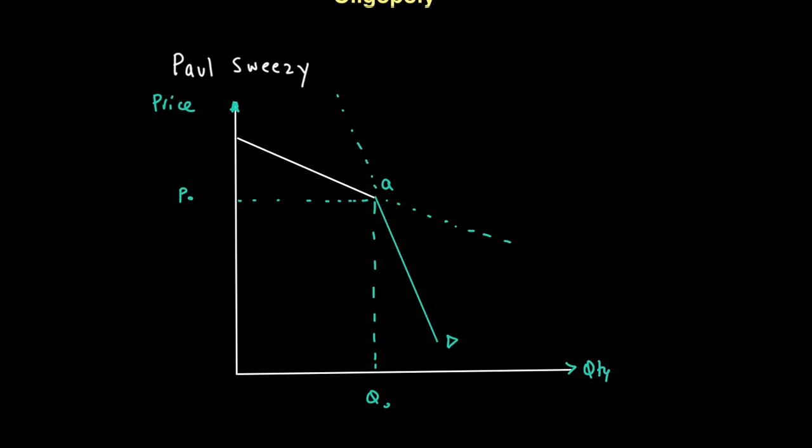Now, why is that so? According to the theory, it says that if the firm raises its price above P0, then it is unlikely that its competitors would raise their price and so a lot of demand would be lost to the other firms. Because if you raise your price and there is interdependence and your competitor doesn't also increase the price, then you will lose the market to them. This means that above P0, when you raise the price, demand will be relatively elastic, since a small increase in price will lead to a large fall in quantity demanded.